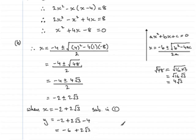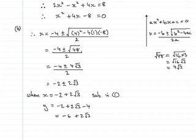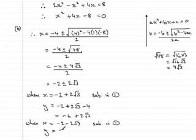Going to do exactly the same again for the other value of x. So when x was equal to minus 2 minus 2 root 3, again sub this into 1, and we get the corresponding value for y, which is y equals minus 2 minus 2 root 3, that's the x part, and then subtract the remaining 4. So what we get is equal to minus 6 minus 2 root 3.